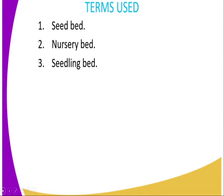On to the terms used. We have a seed bed. What is a seed bed? A seed bed is a piece of land where plants are planted and grow to maturity and are harvested while on the same piece of land.